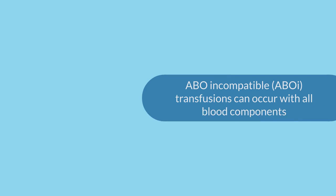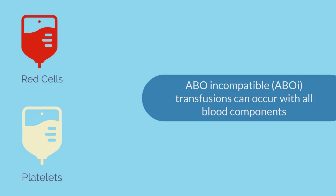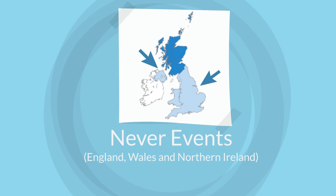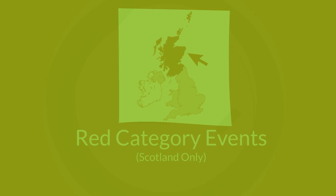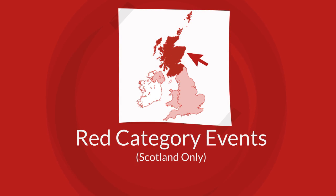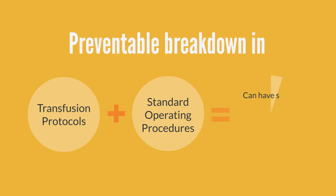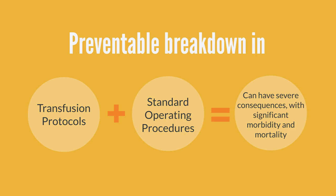ABO incompatible, referred to here as ABOI transfusions, can occur with all blood components: red cells, platelets, or plasma components, which are fresh frozen plasma, pathogen-inactivated fresh frozen plasma, and cryoprecipitate. ABOI transfusions are considered as never events in England, Wales and Northern Ireland, and are raised as red category events in Scotland. They demonstrate a preventable breakdown in transfusion protocols and standing operating procedures, and can have severe consequences with significant morbidity and mortality.